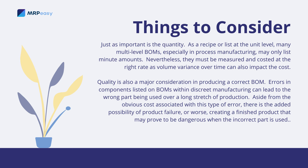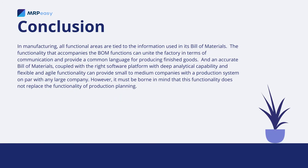Quality is also a major consideration in producing a correct bill of materials. Errors in components listed on bill of materials within discrete manufacturing can lead to the wrong part being used over a long stretch of production. Aside from the obvious cost associated with this type of error, there is the added possibility of product failure — or worse, creating a finished product that may prove to be dangerous. When the incorrect part is used in manufacturing, all functional areas are tied to the information used in its bill of materials.